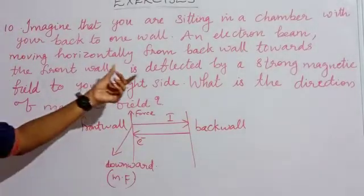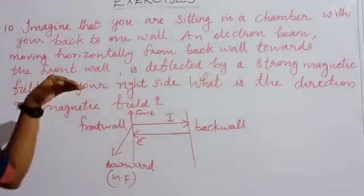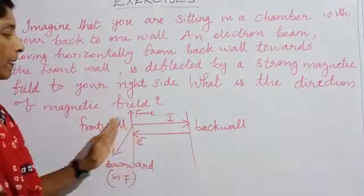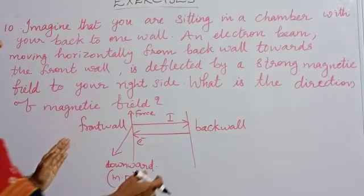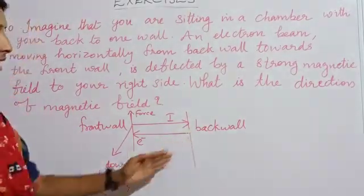It is deflected by a strong magnetic field to your right side. So, after reaching here on the front board, it is deflected towards our right side. How are we sitting? We are here on the back board.